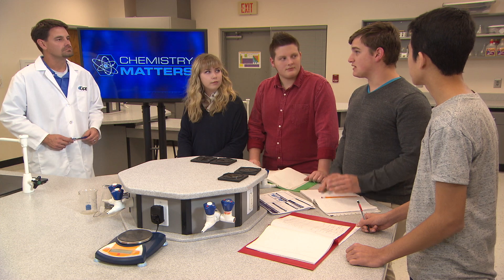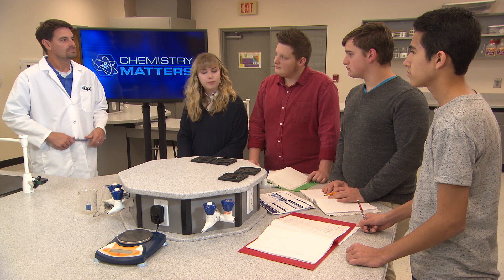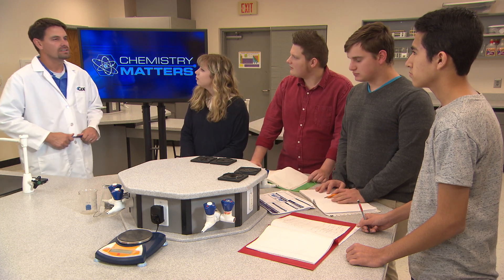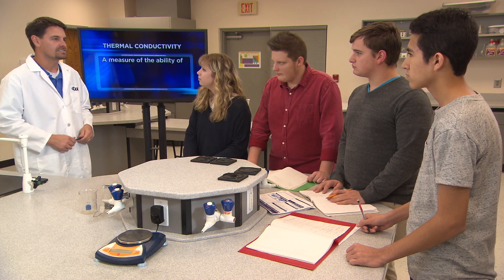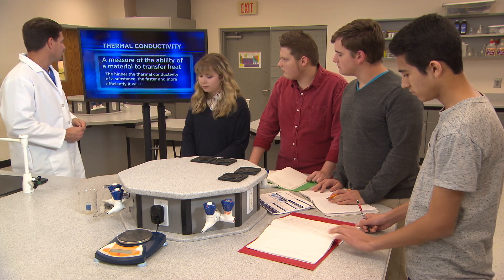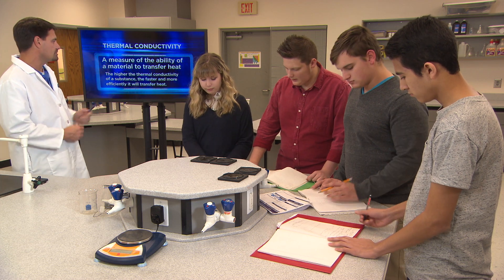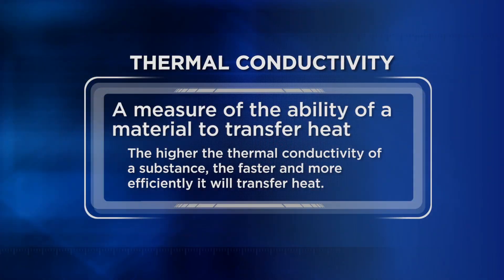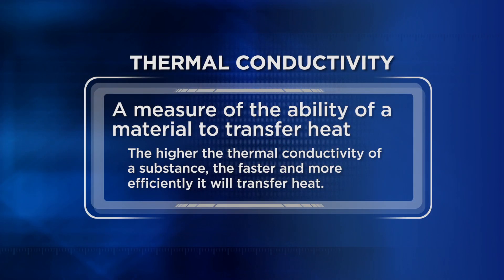our hypothesis is that different materials have different heat conductivity, kind of like electrical conductivity. That's a good start. What you're talking about is thermal conductivity, which is a measure of the ability of a material to transfer heat. The higher the thermal conductivity of a substance, the faster and more efficiently it will transfer heat. And the thermal conductivity of metals is quite a bit higher than that of plastics.